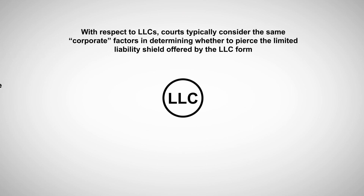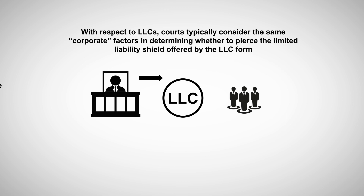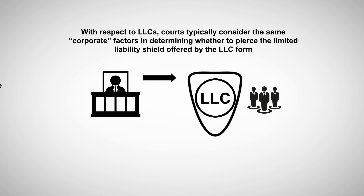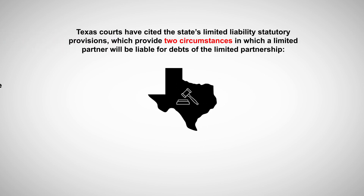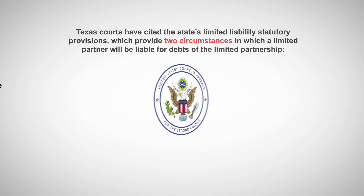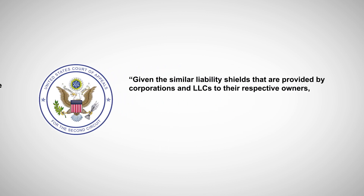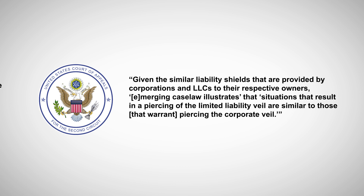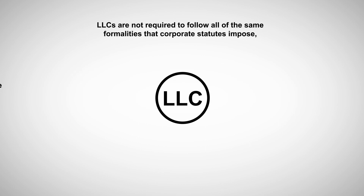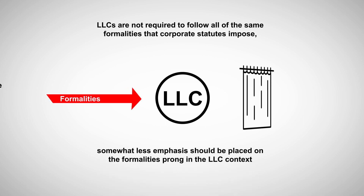With respect to LLCs, courts typically consider the same corporate factors in determining whether to pierce the limited liability shield offered by the LLC form. The Second Circuit Court of Appeals stated: given the similar liability shields provided by corporations and LLCs to their respective owners, emerging case law illustrates that situations that result in a piercing of the limited liability veil are similar to those that warrant piercing the corporate veil. However, because LLCs are not required to follow all of the same formalities that corporate statutes impose, somewhat less emphasis should be placed on the formalities prong in the LLC context.